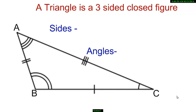Right here we have triangle ABC. The sides of the triangle are side AB, BC, and CA.